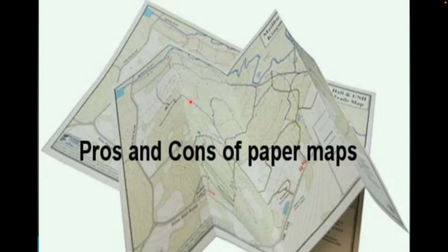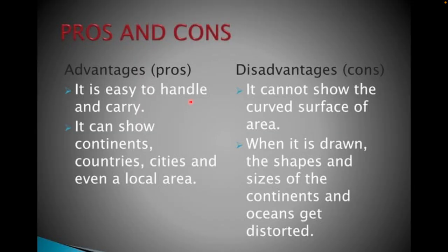The map also has some pros and cons, like merits and demerits, just like the globe. The first advantage is that it is very easy to handle — it is just a piece of paper, you can easily carry it from one place to another. We can show whatever we want, like continents, countries, cities, or local areas.